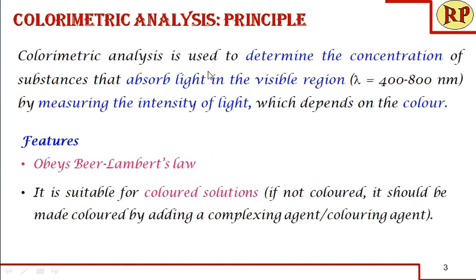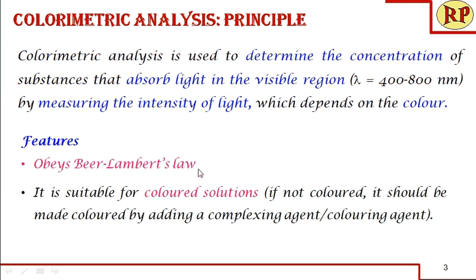Colorimetric analysis is used to determine the concentration of substances that absorb light in the visible region, i.e. the wavelength between 400 to 800 nm, or more specifically 400 to 750 nm, by measuring the intensity of light which depends on the intensity of the colour. This applies to coloured solutions only. If the solution is not coloured, we need to make it coloured by using a complexing agent or colouring agent, and this obeys Beer-Lambert's law.